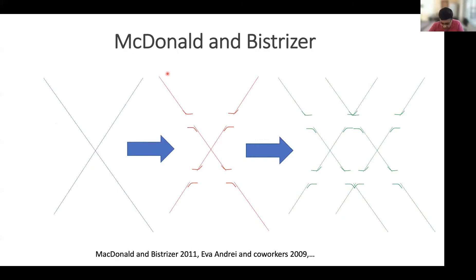In the first part of the talk, I want to talk about this material, twisted trilayer graphene, which is new — but it's all of two years old, which in this business is kind of infinitely old. I want to give you a sense of what's interesting about the atomic and electronic structure of this material.